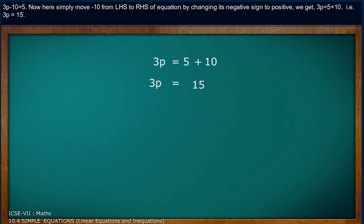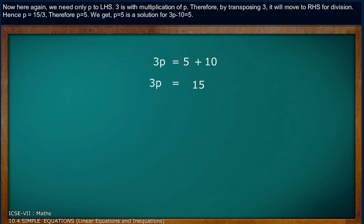That is, 3p equals 15. Now here again, we need only p on the left-hand side. 3 is with multiplication of p. Therefore, by transposing 3, it will move to right-hand side for division.